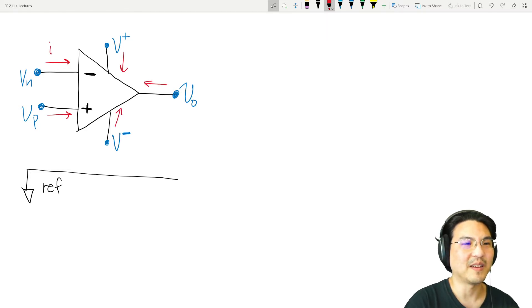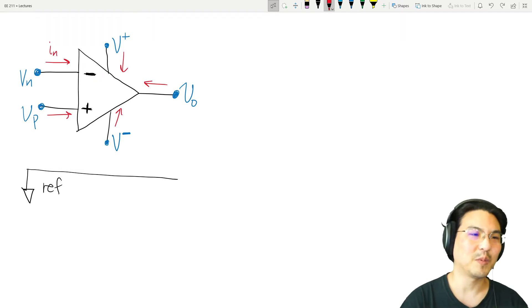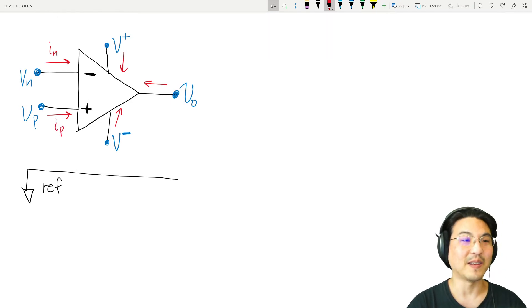Now for current, I'm just going to draw all the currents going in. And I'll label this IN for the negative sign. So that's the inverting input. IP for like the plus sign. That's my non-inverting input. Here, I'll just call this IC plus for my positive power supply. IC minus for my negative power supply. Well, not V, current. And IO for the output current.